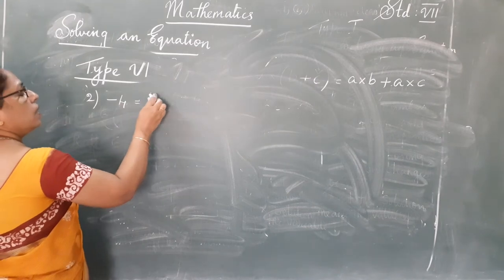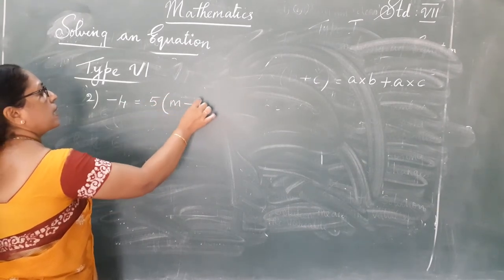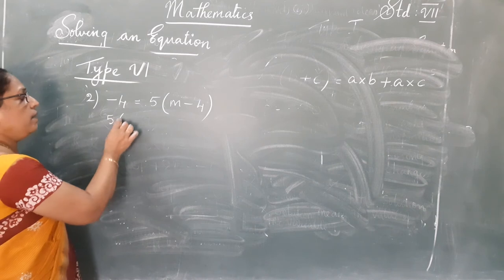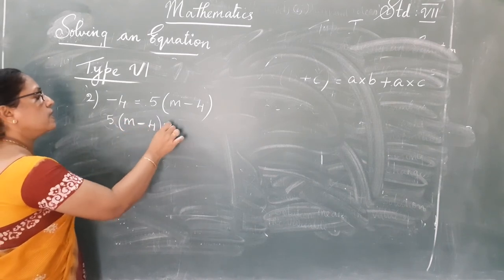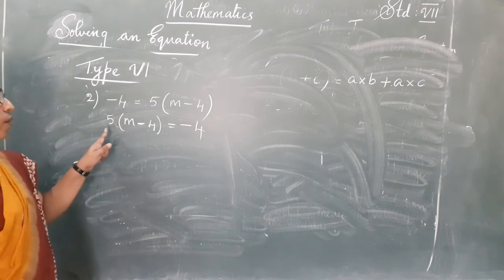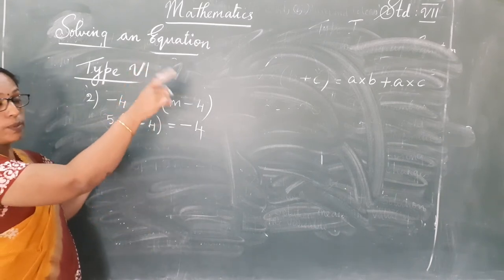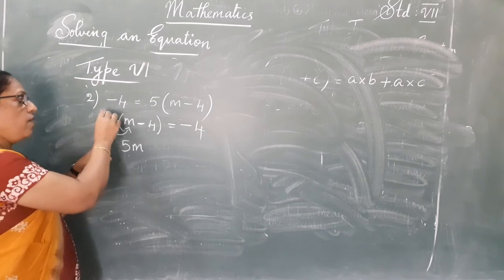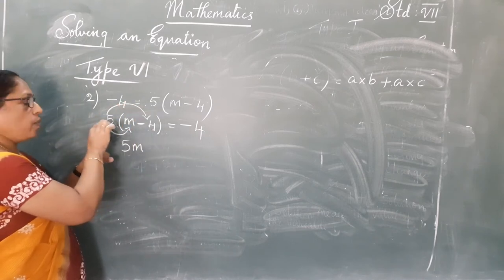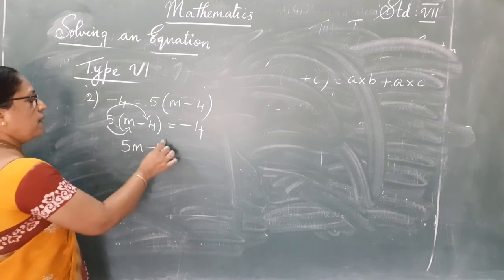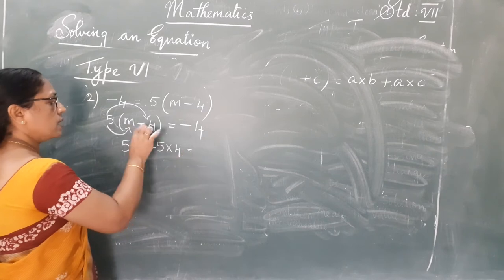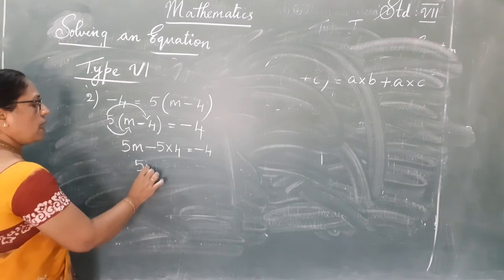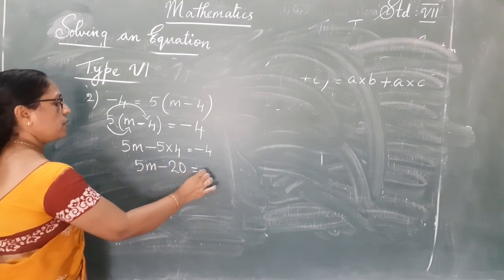Second question: negative 4 equal to 5 into M minus 4. First, turn the equation: 5 into M minus 4 equal to negative 4. Now apply the distributive property. 5 into M gives 5M. Check the sign: 5 is positive, 4 is negative — positive and negative gives negative. 5 into 4 is 20, with negative sign, so minus 20. We get 5M minus 20 equal to negative 4.